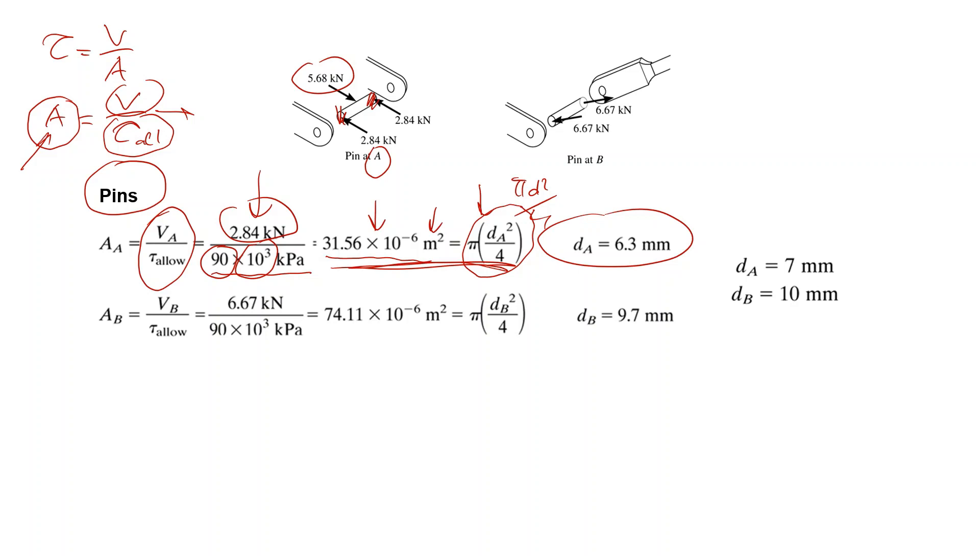The same you can do for point B. For point B the force and allowed shear stress are the same, but the force is not divided. Why? Because it is only a single sided pin connection.